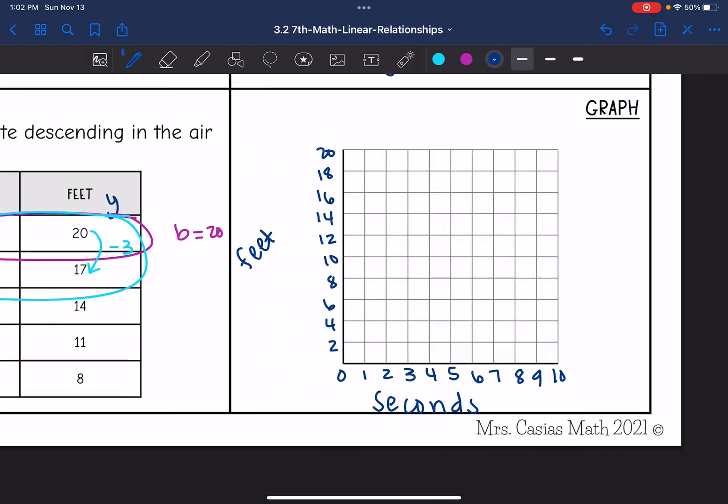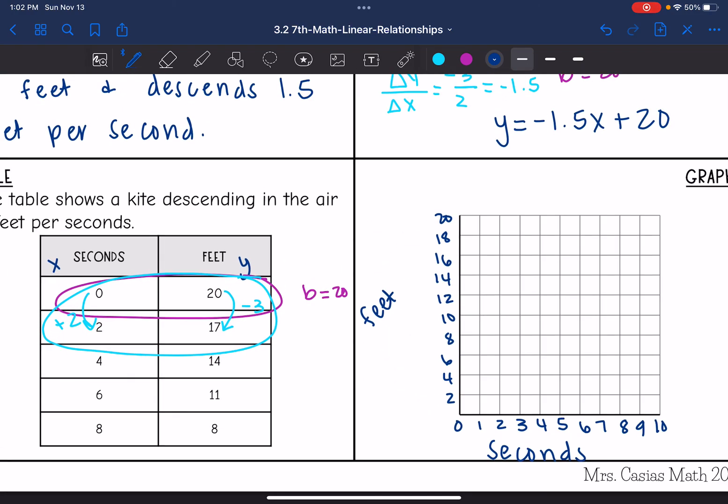And now I can just plot these points from the table. So 0, 20 was the first one. 2 is 17, which is halfway between 18 and 16. And then 4, 14, 6, 11, and then 8, 8. And then I'm going to go ahead and connect these points, since this is a continual thing that is happening.